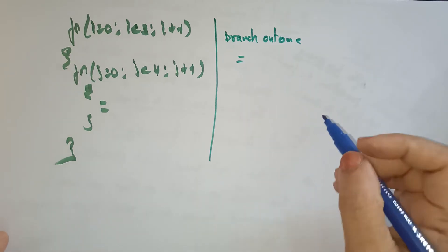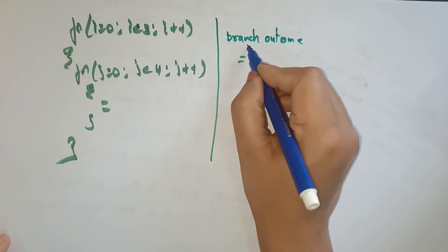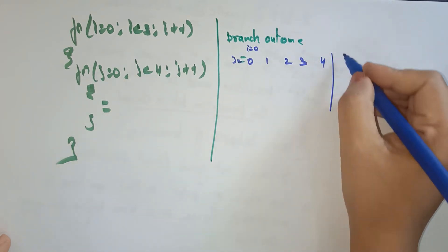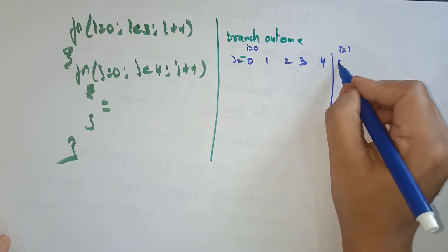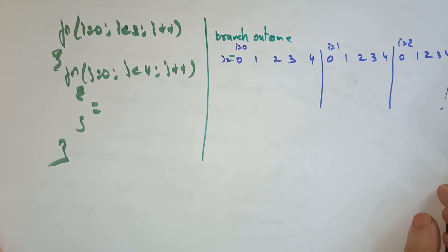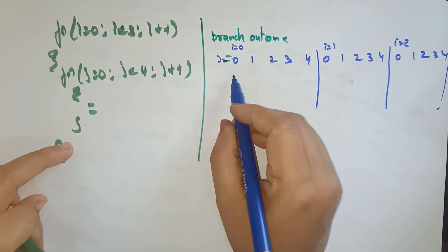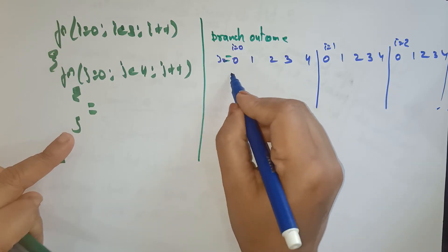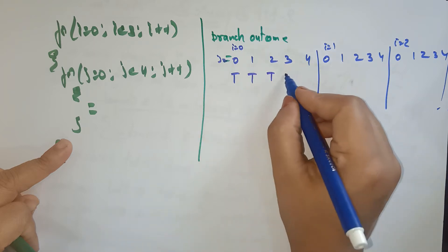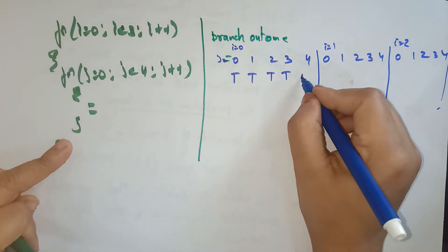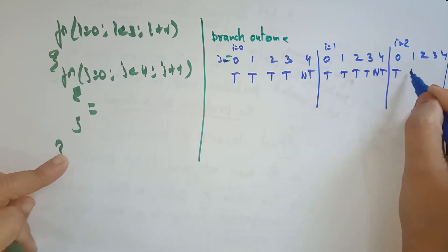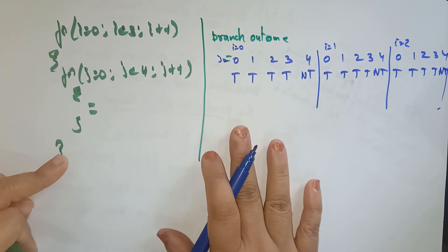Starting with i=0, j goes 0,1,2,3,4 — when j=4, 4 less than 4 is false so we exit. Then i=1: j=0,1,2,3,4; i=2: same; and so on. When j=0,1,2,3 the condition is true so take the branch. When j=4 the condition is false — don't take. So the branch outcome is: T,T,T,T,NT,T,T,T,T,NT,T,T,T,T,NT and so on.